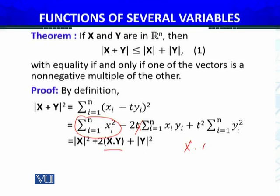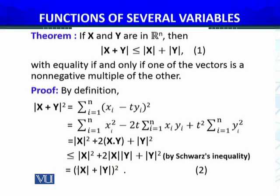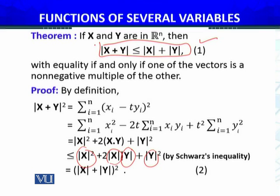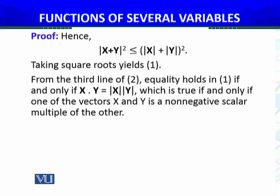Here we have X dot Y, and we apply Schwarz's inequality, which was proved in the last module. By Schwarz's inequality, we can replace the dot product term, changing the equality sign to a greater-than-or-equal sign. Applying Schwarz's inequality gives us a complete square, and taking the square root, this inequality holds, completing the proof.